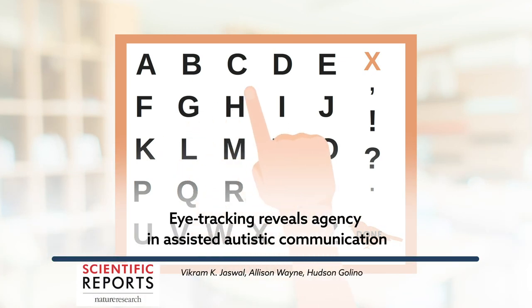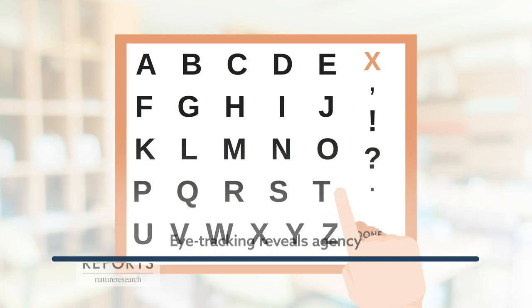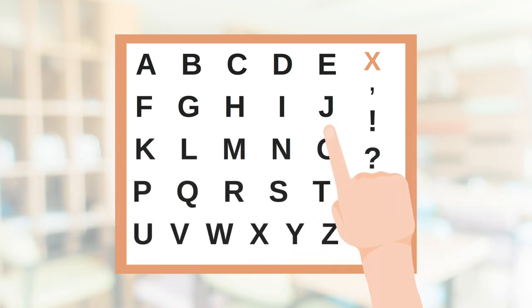This is a letter board. For many autistic people who can't speak, the letter board is their most effective means of communication. But it's also a controversial one.